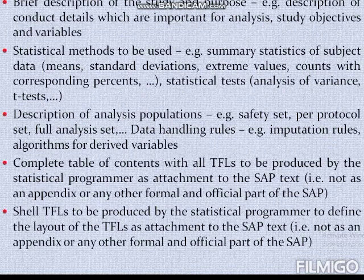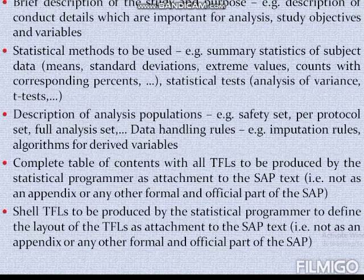At least the following contents should be included in the SAP: a brief description of the study and purpose — for example, description of conduct details important for analysis, study objectives, and variables. Second, statistical methods to be used — for example, summary statistics of subject data such as means, standard deviations, extreme values, counts with corresponding percentages, and statistical tests such as analysis of variance and t-tests. Third, description of analysis populations — for example, safety set, per protocol set, and full analysis set.